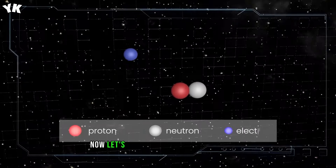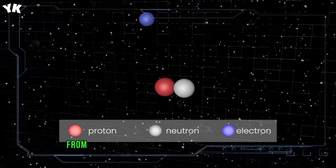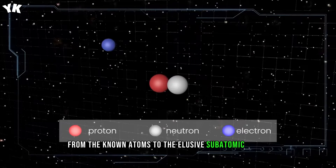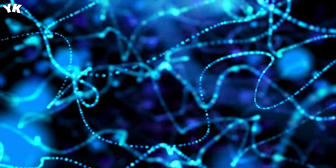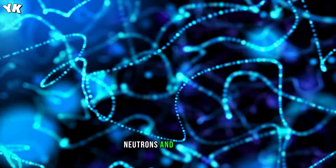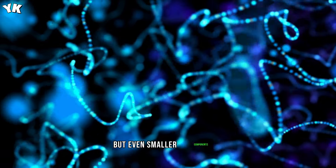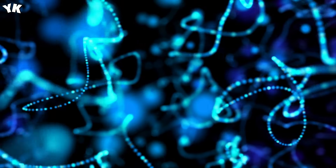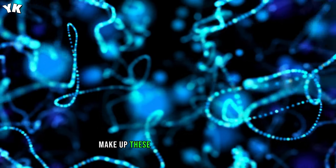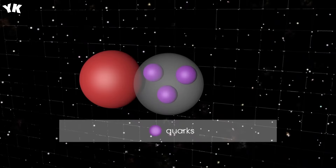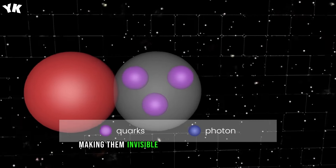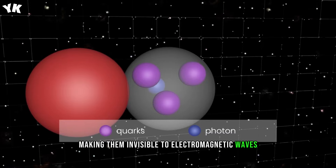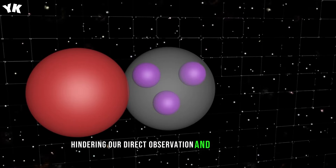Now, let's dive into the world of particles, from the known atoms to the elusive subatomic realm. We discovered protons, neutrons, and electrons, but even smaller components — quarks and leptons — make up these fundamental particles. The challenge lies in their tiny size, making them invisible to electromagnetic waves, hindering our direct observation and understanding of their properties.